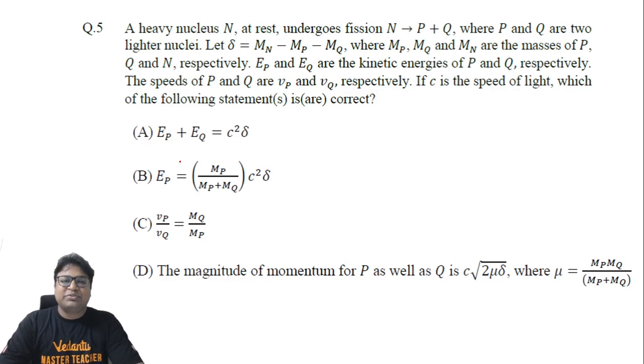Hello students, this is question number 5 of Paper 2 of JEE Advanced 2021 Physics. A straightforward question—it talks about a fission reaction in which a nucleus N undergoes fission to get converted into P and Q.